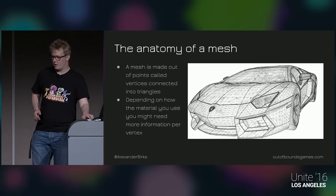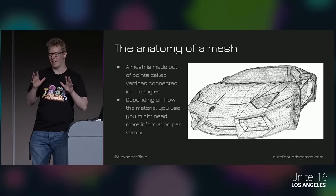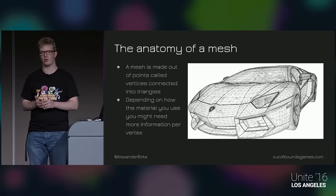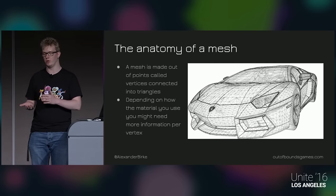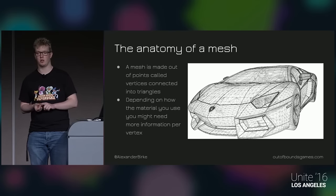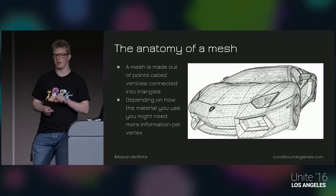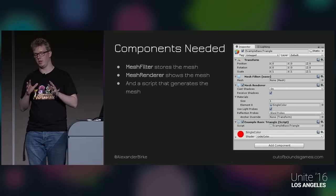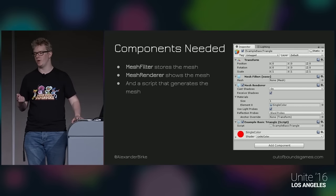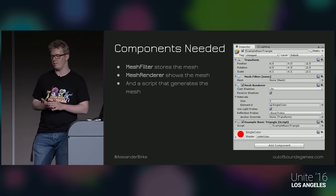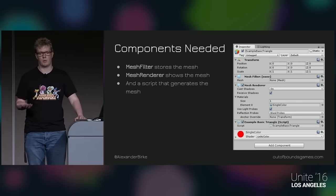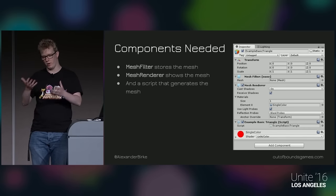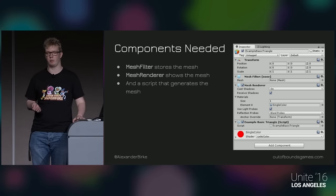So let's go over the basics. A mesh is made out of points called vertices that are then combined into triangles that can be rendered by the GPU. That means the most basic thing you need is a list of vertices and a list of triangles — how those dots are connected. Depending on how you want your surface to look you might need more information per vertex. In Unity, you need a mesh filter, which stores your mesh, and a mesh renderer or skin mesh renderer to render it. Of course you also need a script.